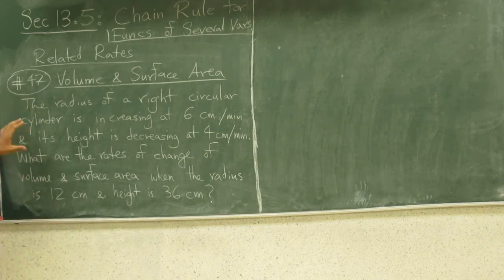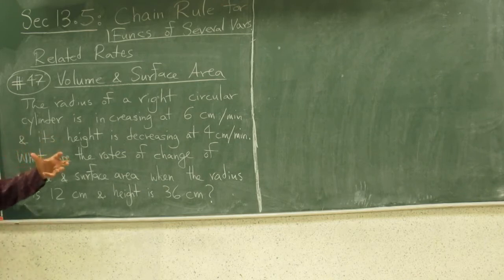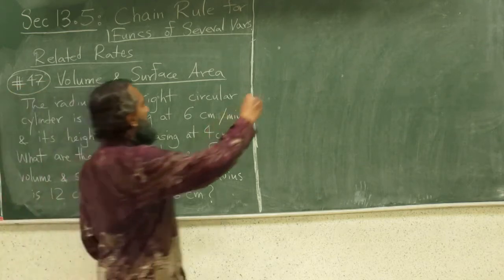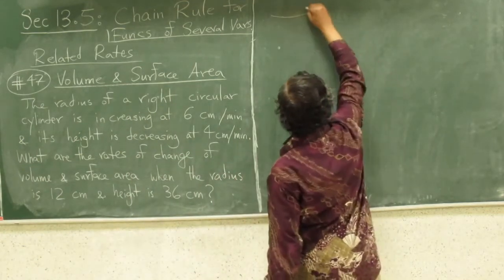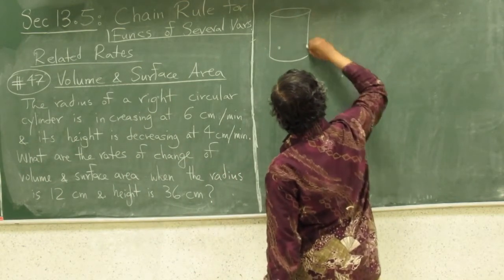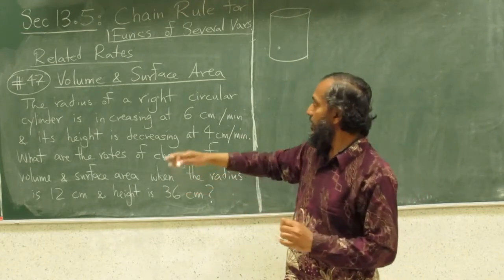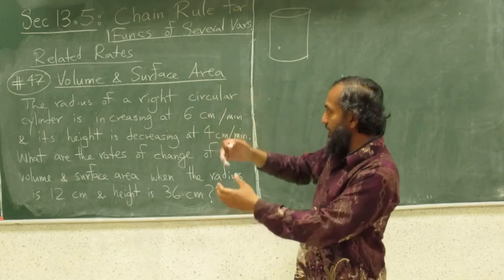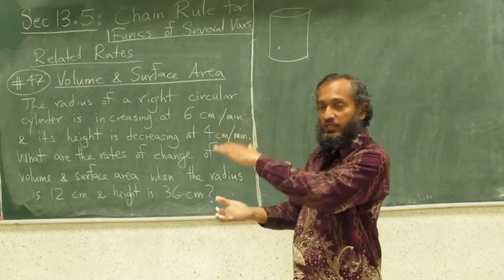We have something similar here, but now we will have a function of more than one variable: volume and surface area. The radius of a right circular cylinder is increasing at 6 centimeters per minute and the height is shrinking at 4 centimeters per minute.